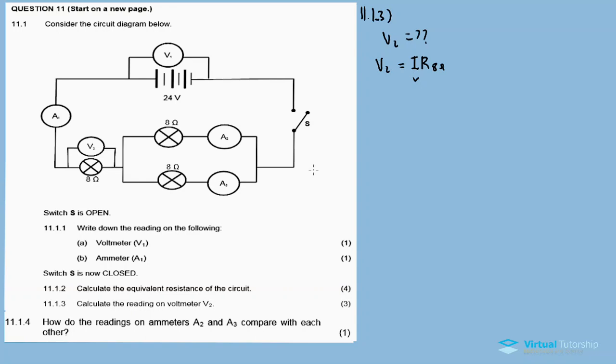The current for the whole circuit, I_total, equals V_total divided by R_total. This equals 24 volts divided by 12 ohms, which equals 2 amperes. This is the current flowing through the whole circuit, and also the same current flowing through the 8 ohm resistor.